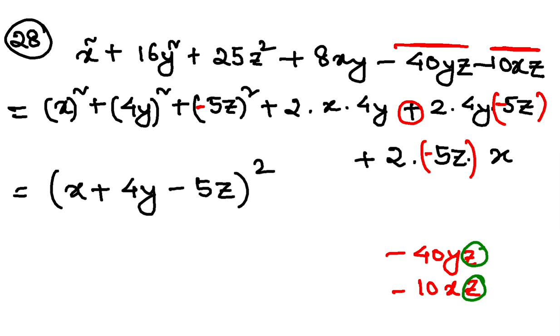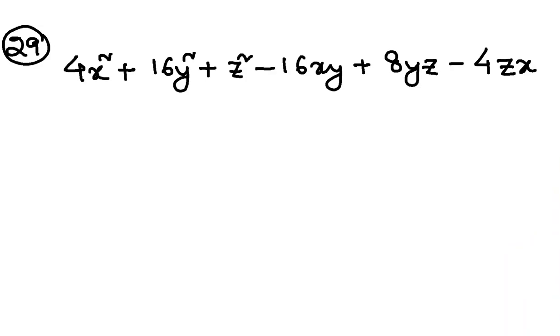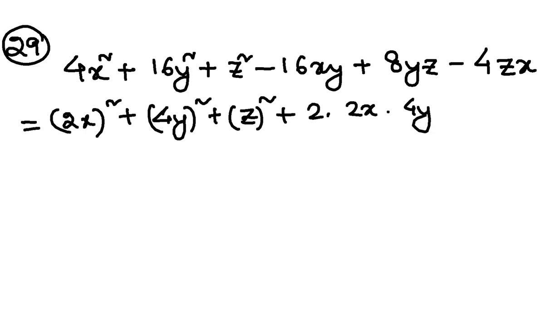Let's go to question number 29. Now, 29, 4x whole square is 2x whole square, 16y is 4y whole square, and this is z whole square. Done? Plus 2 into a into b, plus 2 into b into c,